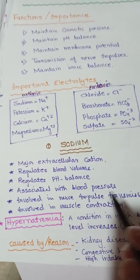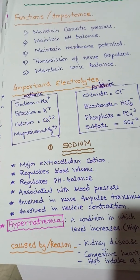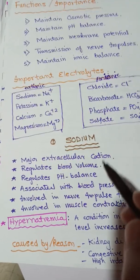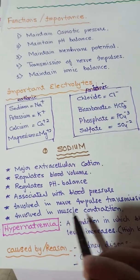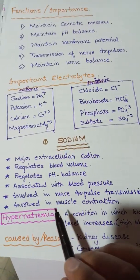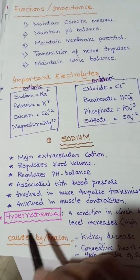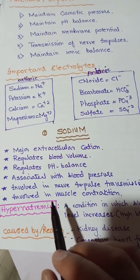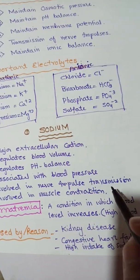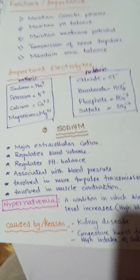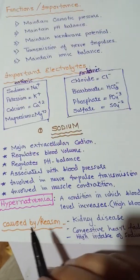Sodium is associated with blood pressure — if blood volume is high, blood pressure will also be high. It is involved in transmission of nerve impulses because of active or passive membrane potential, and it is involved in muscle contraction and relaxation. There are different conditions if the sodium level is high or low inside living organisms.